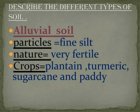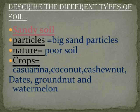Sandy loam soil — Particles: coarse and fine particles mixed. Water retention: poor soil. Crops: Casuarina, Coconut, Cashew nut, Dates, Groundnut and Watermelon.